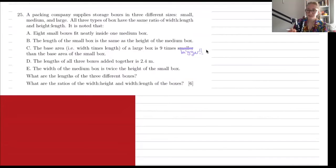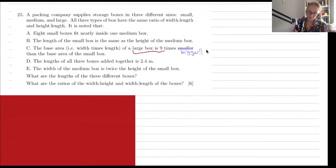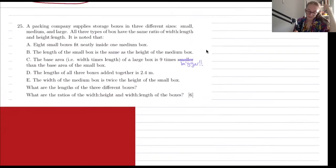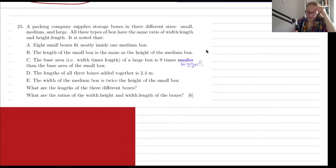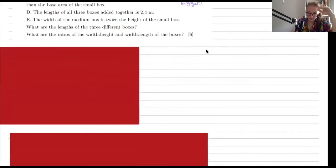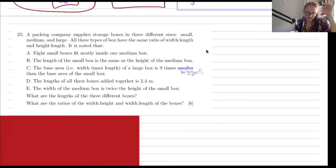This is the second and last question I could find that exercises these problem-solving skills. This one also has a mistake — they accidentally said that the large box is nine times smaller than the small box, which doesn't make sense. It has to be nine times bigger than the base area of the small box. Bearing that in mind, we need to mathematically come up with expressions for all the conditions given. The things we're after are the lengths of the three different boxes and the ratios of width to height and width to length.